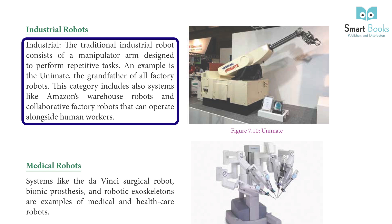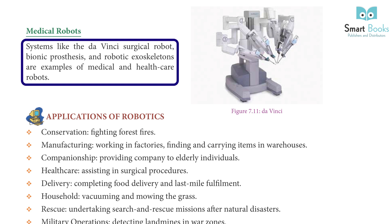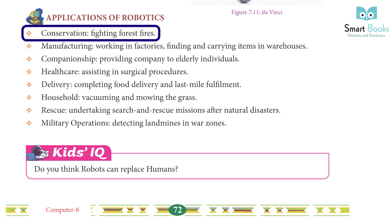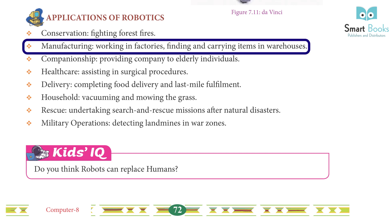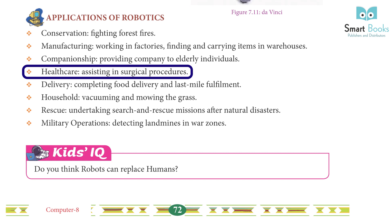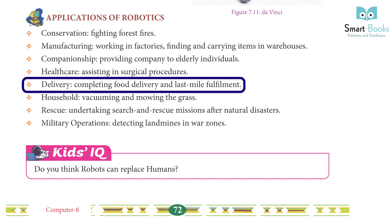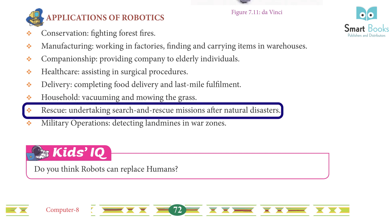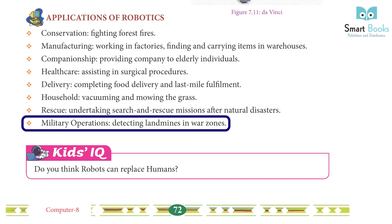Industrial Robots: The traditional industrial robot consists of a manipulator arm designed to perform repetitive tasks. An example is the Unimate — the grandfather of all factory robots. This category also includes Amazon's warehouse robots and collaborative factory robots that operate alongside human workers. Medical Robots: The Da Vinci surgical robot, bionic prostheses, and robotic exoskeletons are examples. Applications of robotics include conservation, fighting forest fires, manufacturing, working in factories, finding and carrying items in warehouses, companionship for elderly individuals, healthcare — assisting in surgical procedures, delivery, and household tasks like vacuuming and mowing the grass.